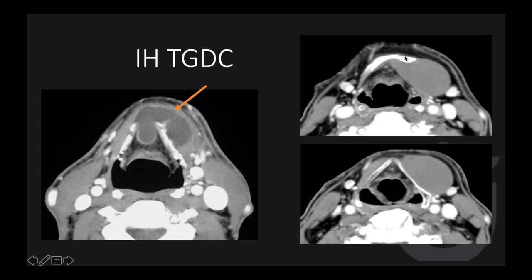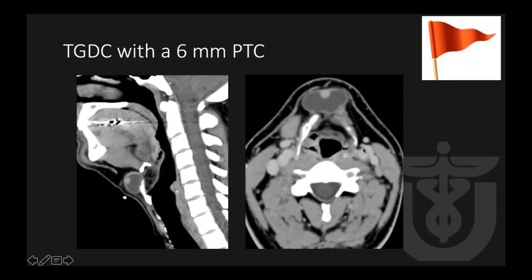In other cases, there is stretching of the strap muscle and pressure erosion into the thyroid lamina. Occasionally you may see nodularity in the thyroglossal duct cyst. That is a big red flag because most likely this is papillary thyroid cancer associated with a thyroglossal duct cyst. In this case, they found a 6 mm papillary thyroid cancer in the thyroglossal duct cyst.